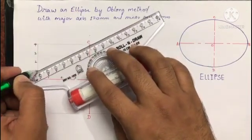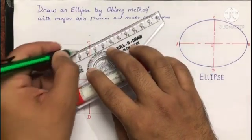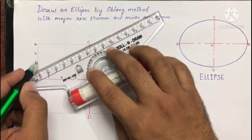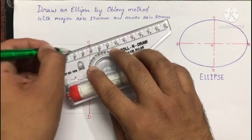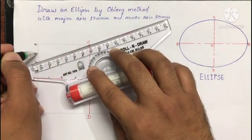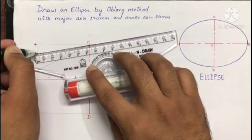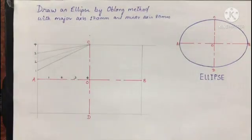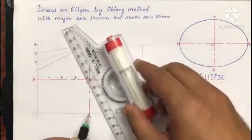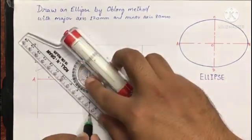Now we connect point C with point number one, then point number two, then point number three with C, and four is already connected.